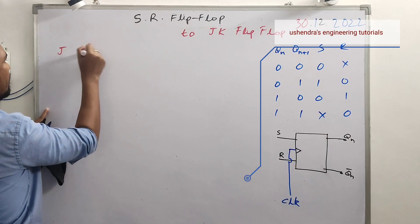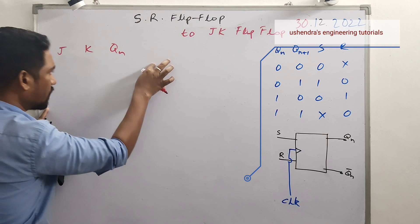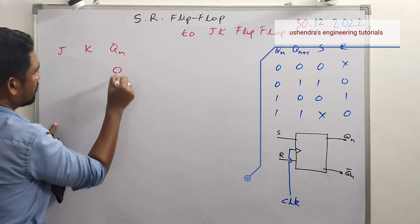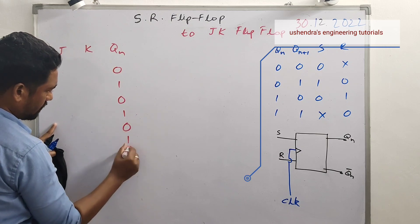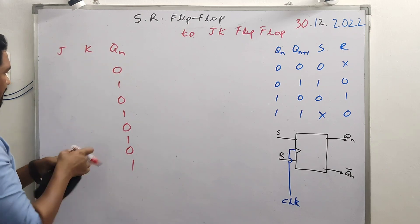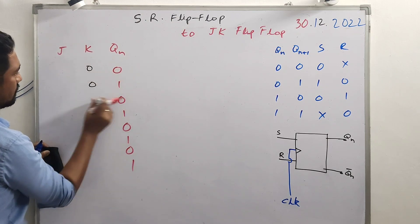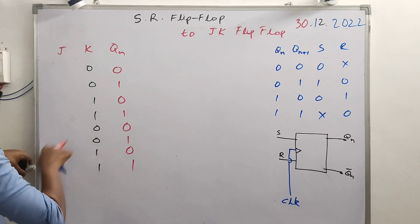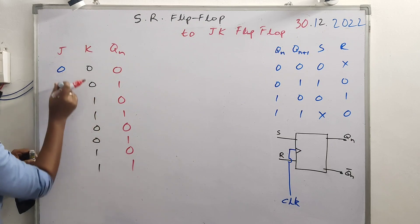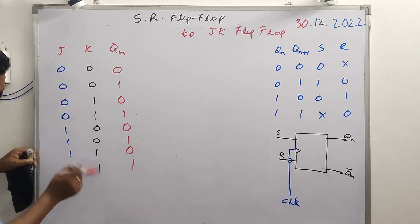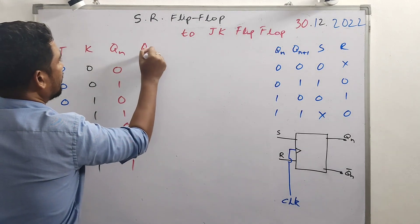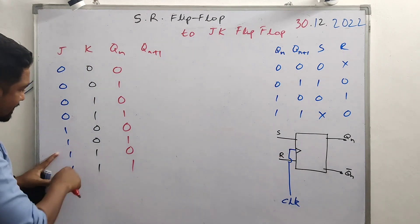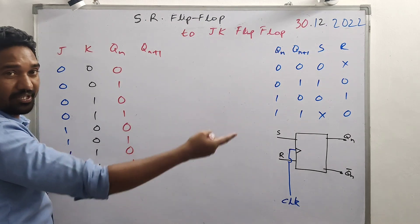For the JK flip-flop, there are different input combinations. With inputs J, K, and current state Qn, we have three inputs giving eight combinations: 0 through 7. The next state Qn+1 values are 0, 0, 1, 1, 1, 0, 0, 1. This truth table is 75% similar to the SR flip-flop's Qn+1 truth table. We use this to predict the next state.